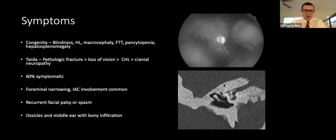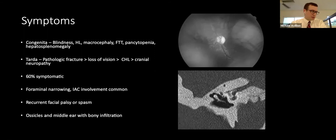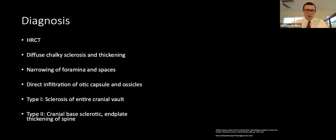Sixty percent of patients are symptomatic, often due to foraminal narrowing — a coronal CT image shows an internal auditory canal diameter of 1.9 mm. This may lead to recurrent facial palsy or spasm. Osteopetrosis also involves the ossicles and otic capsule; the ossicles may be distorted with footplate abnormalities, which differs from fibrous dysplasia.